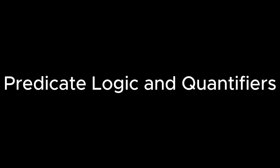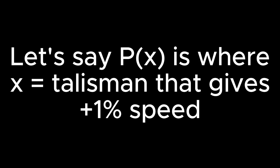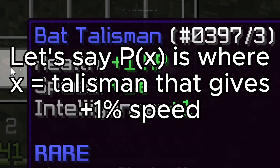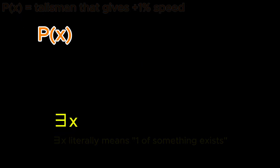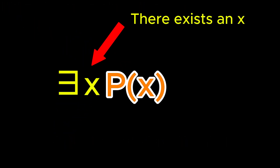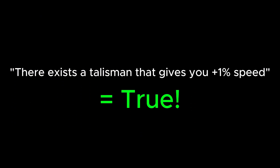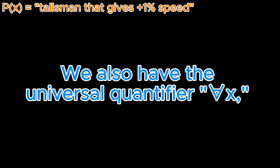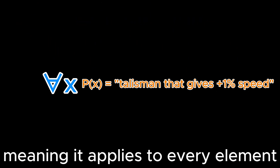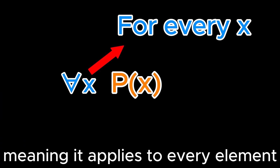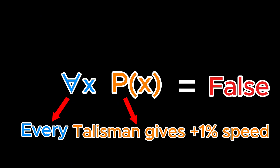Predicate logic and quantifiers focuses on statements which we try to determine if true or false. Let's say function p(x) is where x is a talisman that gives you plus 1% speed. The existential quantifier — 'there exists an x' — means there exists at least one of something. So putting it together: there exists an x such that p(x), meaning there exists a talisman that gives you plus 1% speed — this is a statement that is true. We also have the universal quantifier 'for every x,' meaning it applies to every element. For every x, p(x) means every talisman gives plus 1% speed — this is a statement that is false.